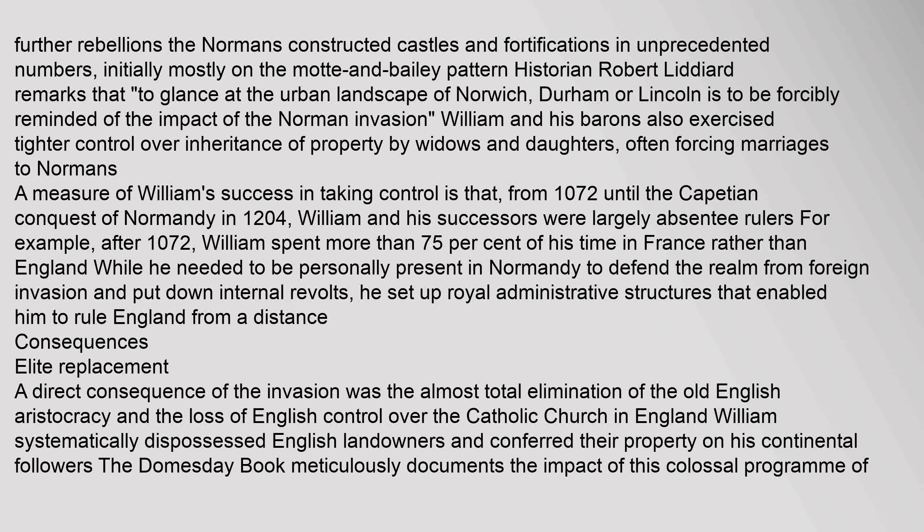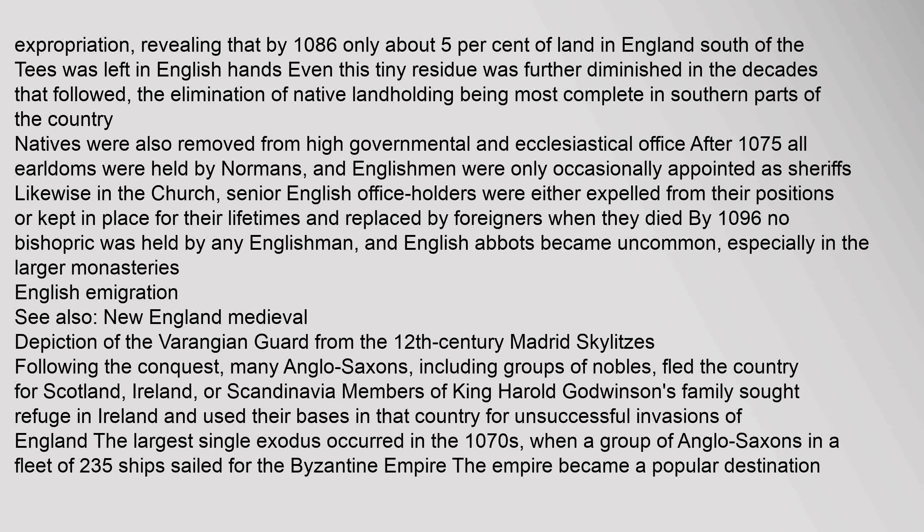A direct consequence of the invasion was the almost total elimination of the old English aristocracy and the loss of English control over the Catholic Church in England. William systematically dispossessed English landowners and conferred their property on his continental followers. The Domesday Book meticulously documents the impact of this colossal program of expropriation, revealing that by 1086 only about 5% of land in England south of the Tees was left in English hands. After 1075, all earldoms were held by Normans, and Englishmen were only occasionally appointed as sheriffs. By 1096, no bishopric was held by any Englishman, and English abbots became uncommon, especially in the larger monasteries.